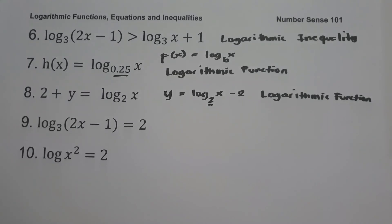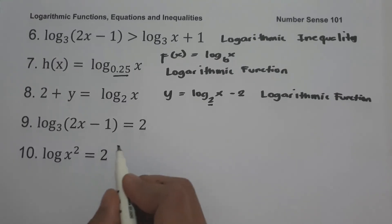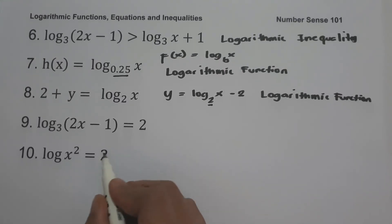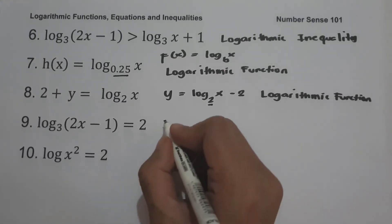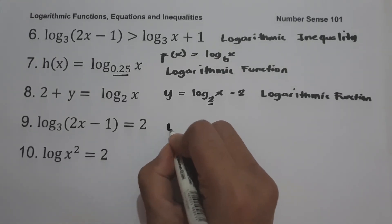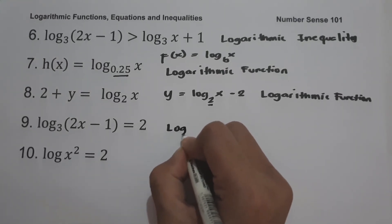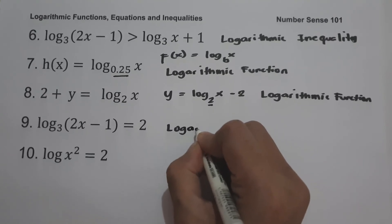On example number 9, log_3(2x minus 1) equals 2. Since we have an equation involving logarithms, therefore, this one is a logarithmic equation.